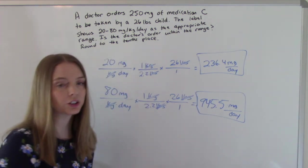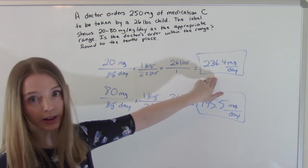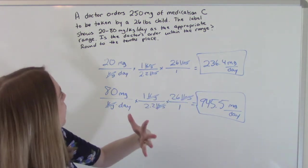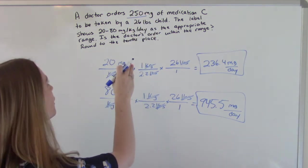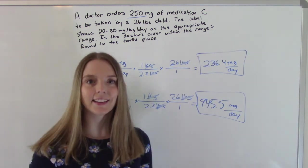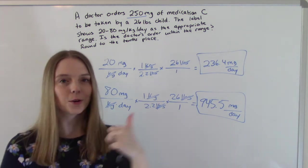So this is our range. This is the minimum amount we can give for it to be therapeutic. And this is the maximum amount we can give. And so what's our order? 250. Does 250 fall within this range? Yes. Yes, it does. So this is a good order. It's appropriate. We can give this med.